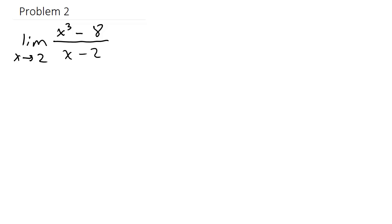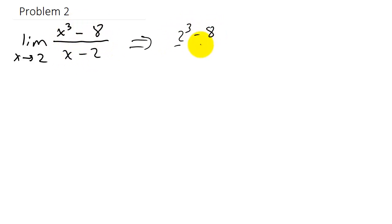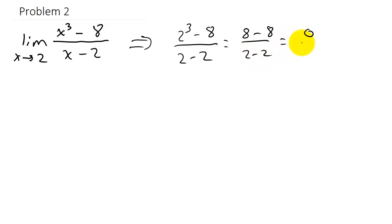Let's take a look at another one. We've got the limit of x cubed minus 8 over x minus 2 as x approaches 2. If we plug in 2, we get 2 cubed minus 8 over 2 minus 2, which gives us 8 minus 8 over 2 minus 2, which is 0 over 0 — so we need to try something else.